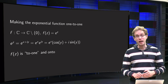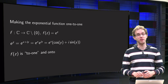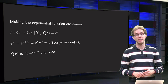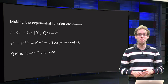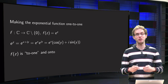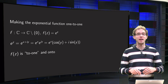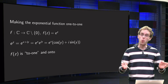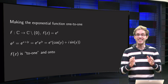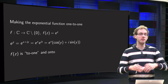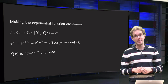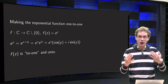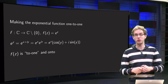We have seen that the exponential function is onto (2-to-1 excluded from the origin), but we have also seen that the exponential function is many-to-1. How many-to-1 exactly? We know that you can always make a function 1-to-1 by restricting its domain, but how far do we need to restrict the domain of the exponential function to make it 1-to-1?